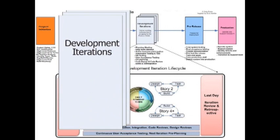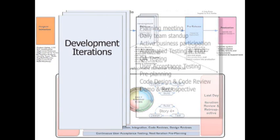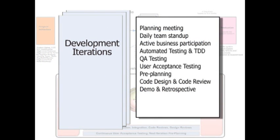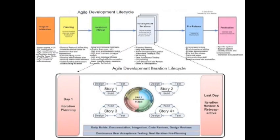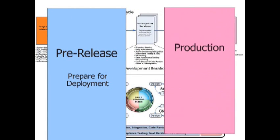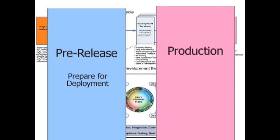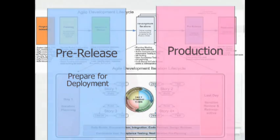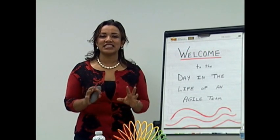Development iterations, or sprints, are probably what you're most familiar with. This is where the team plans, executes, has a demo, and has a retrospective in those small time boxes — and they do it over and over again until they can actually deliver value. Many teams execute iterations and release right away. Some teams execute several iterations and then have a pre-release or hardening iteration before moving to production, which is what you're seeing over there. That's a quick overview of the agile lifecycle, and now we're getting ready to actually experience it and see it in practice.